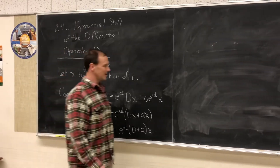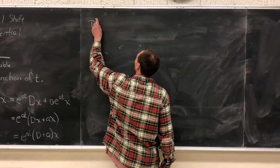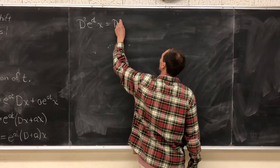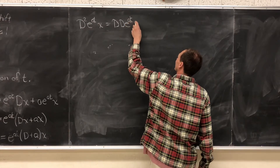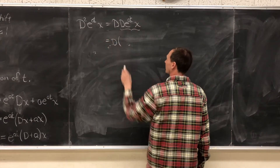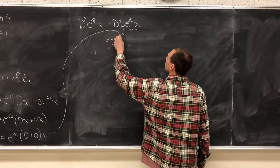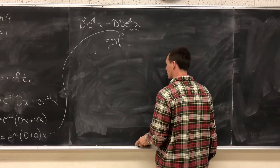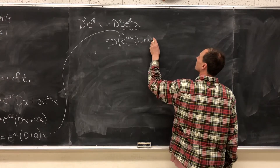Now let's take the second derivative — D² of e^(at)·x. Since D² is D times D, we write this as D times [D applied to e^(at)·x]. We already found that inner piece, so this becomes D times e^(at) times (D + a)·x.